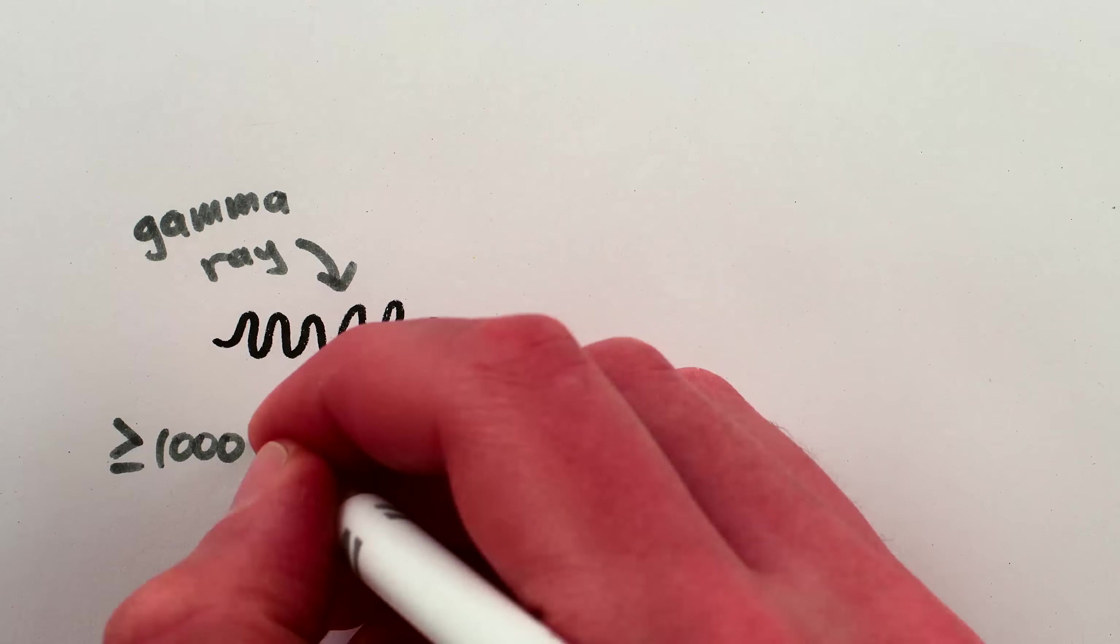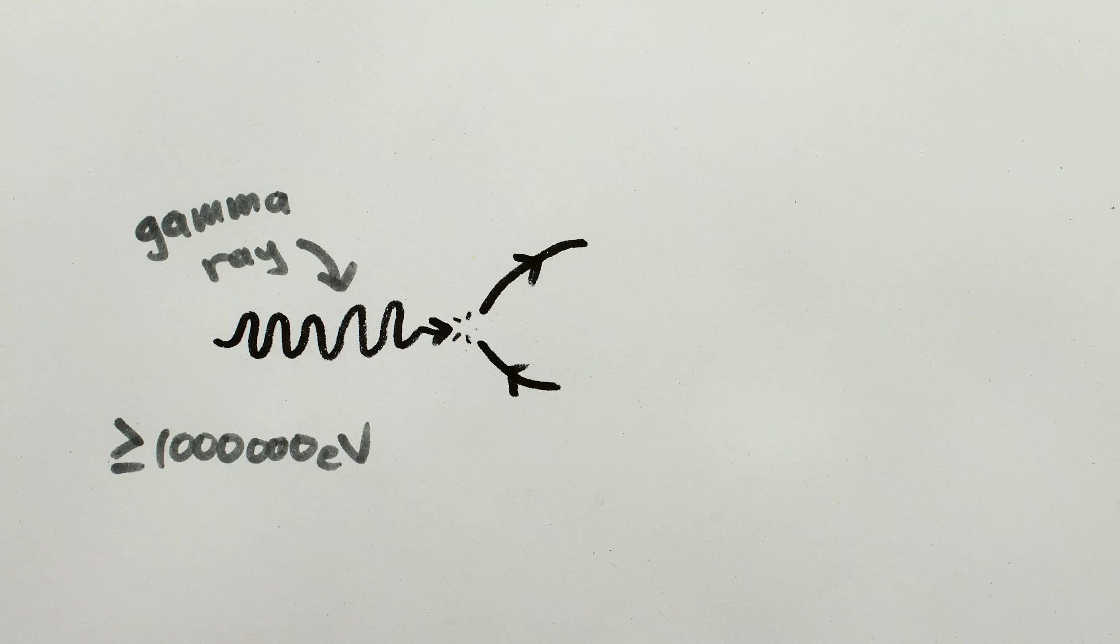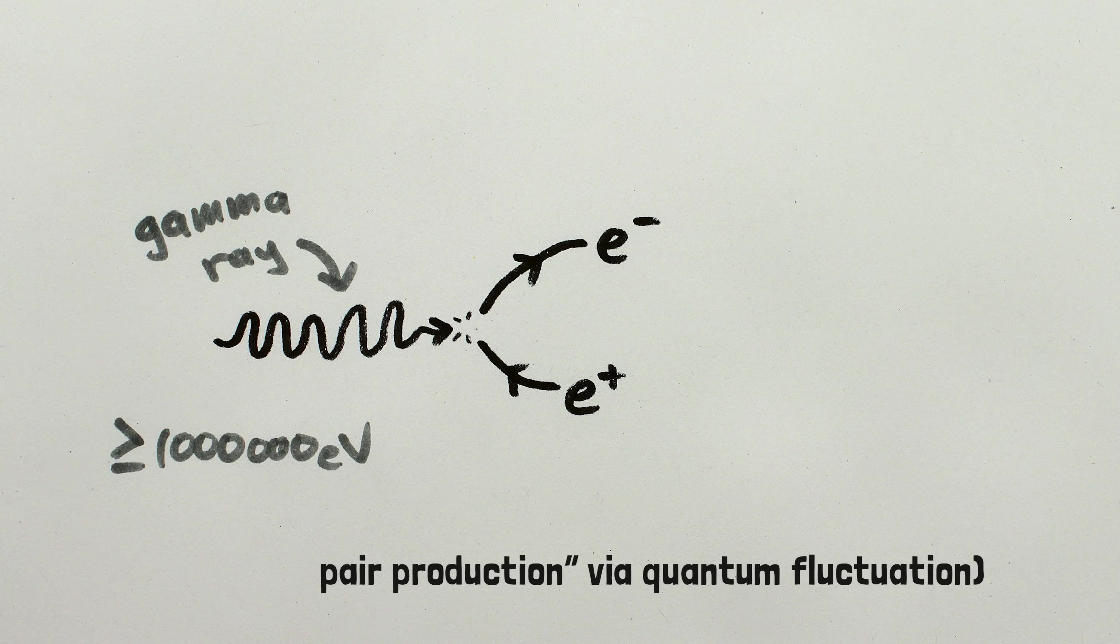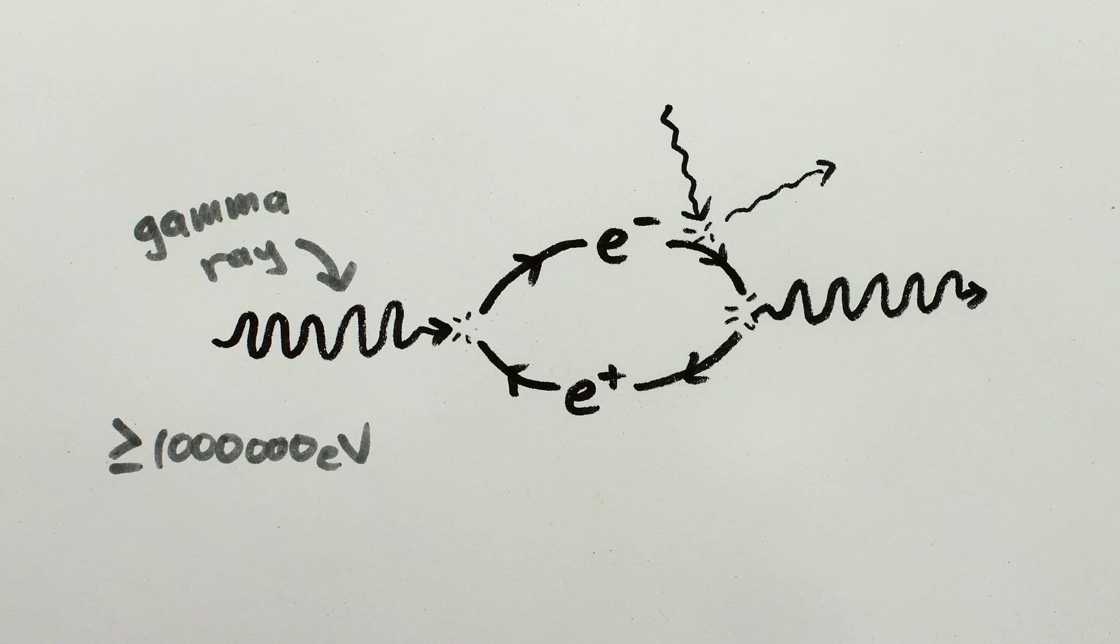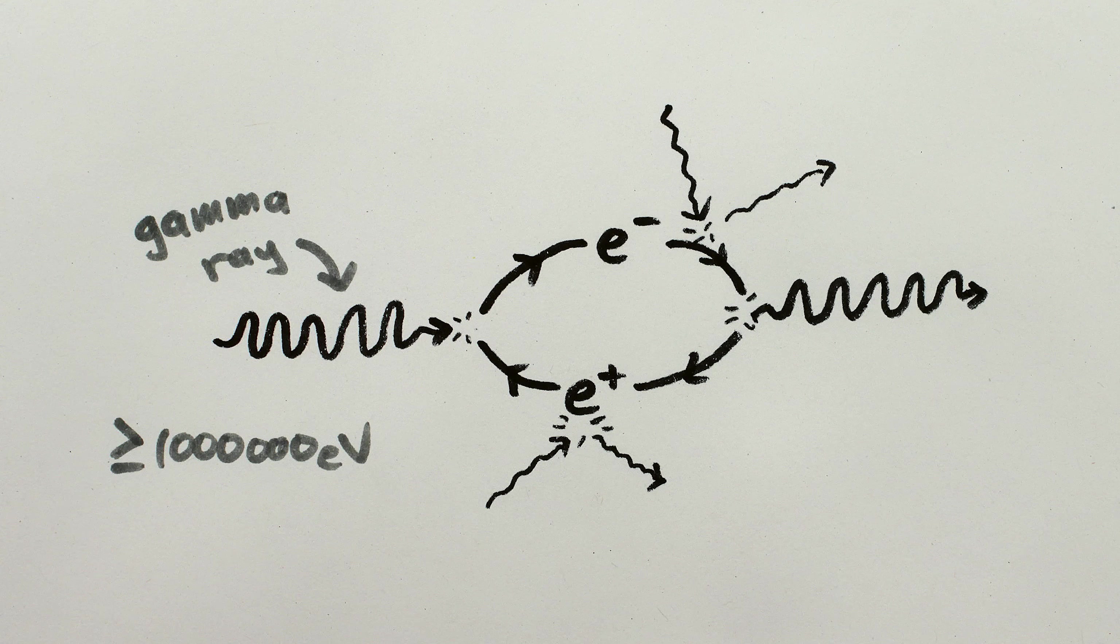But third and finally, super high energy photons can spontaneously turn into particle-antiparticle pairs, like an electron and a positron, and then back again. And these particles can deflect other photons, resulting in legit photon-on-photon scattering.